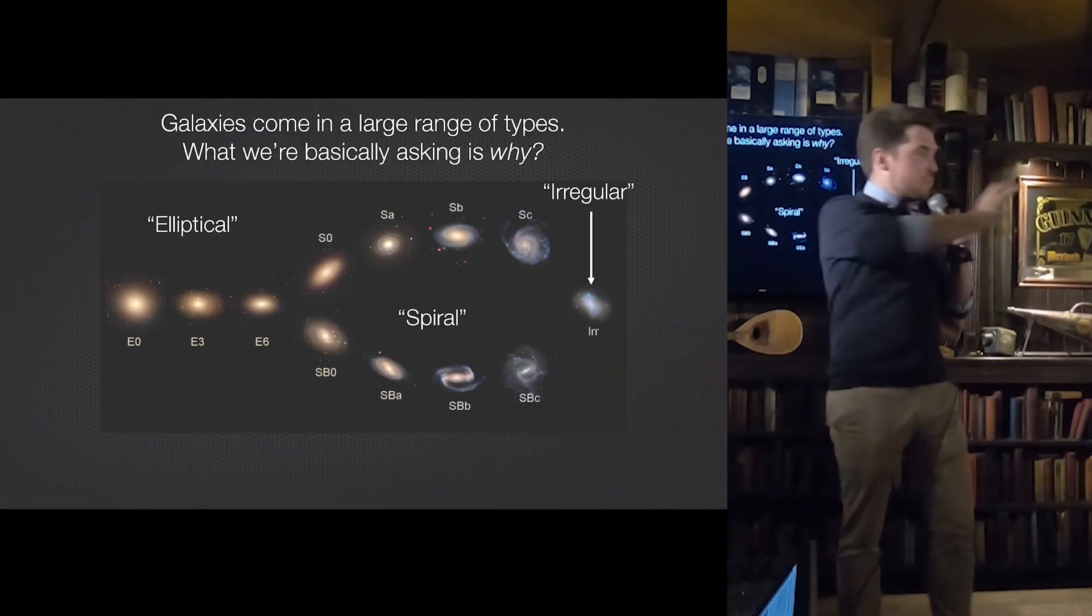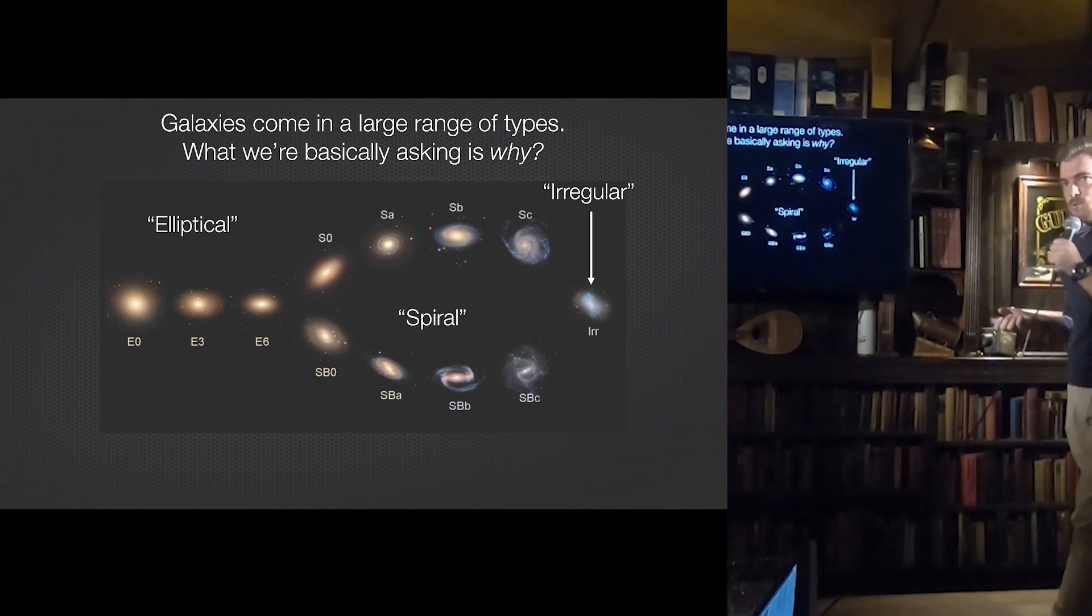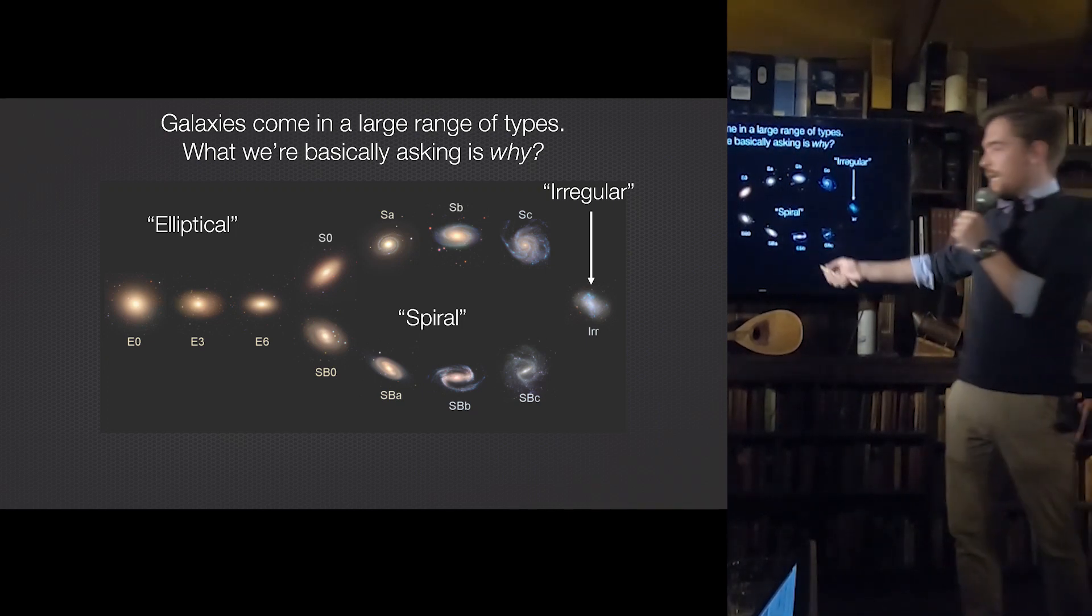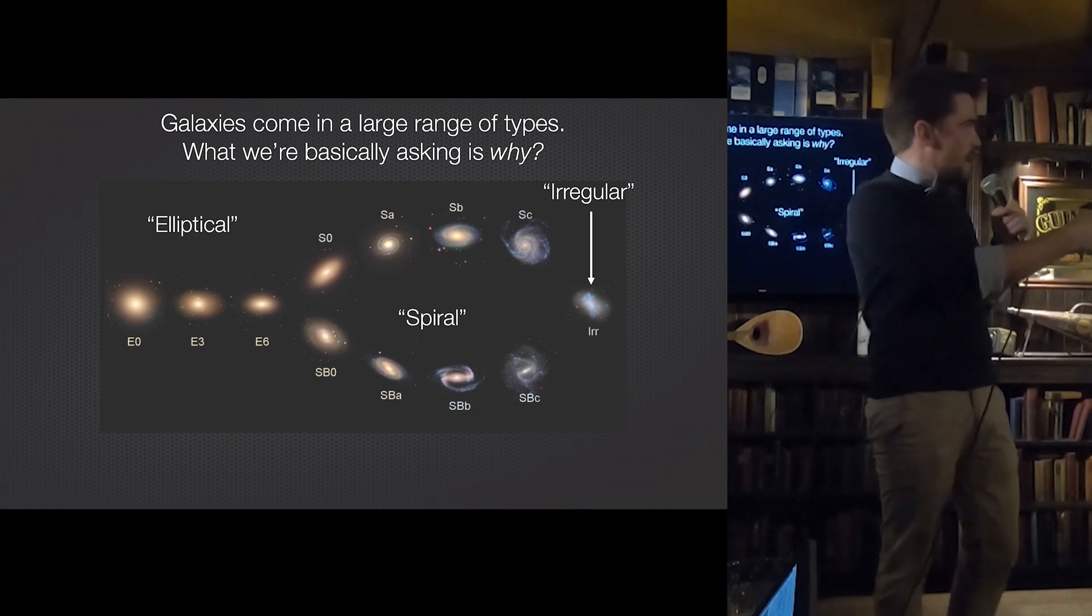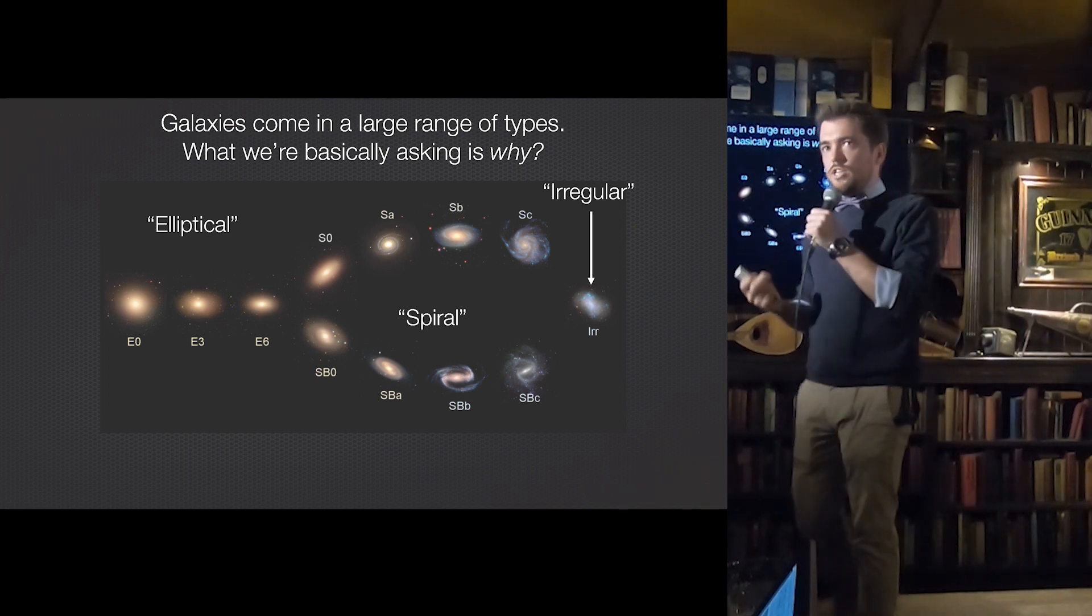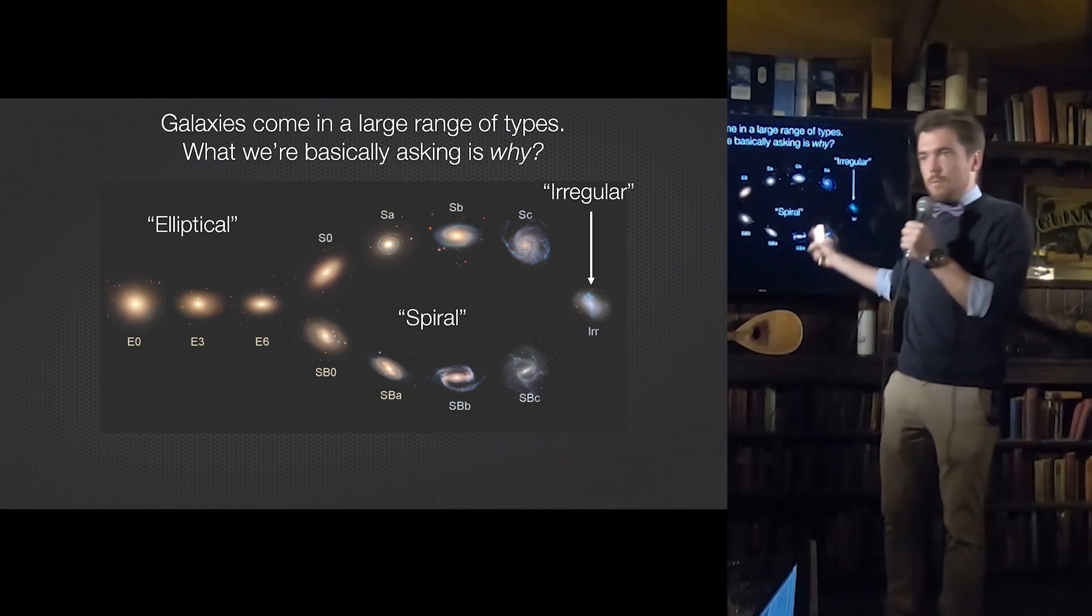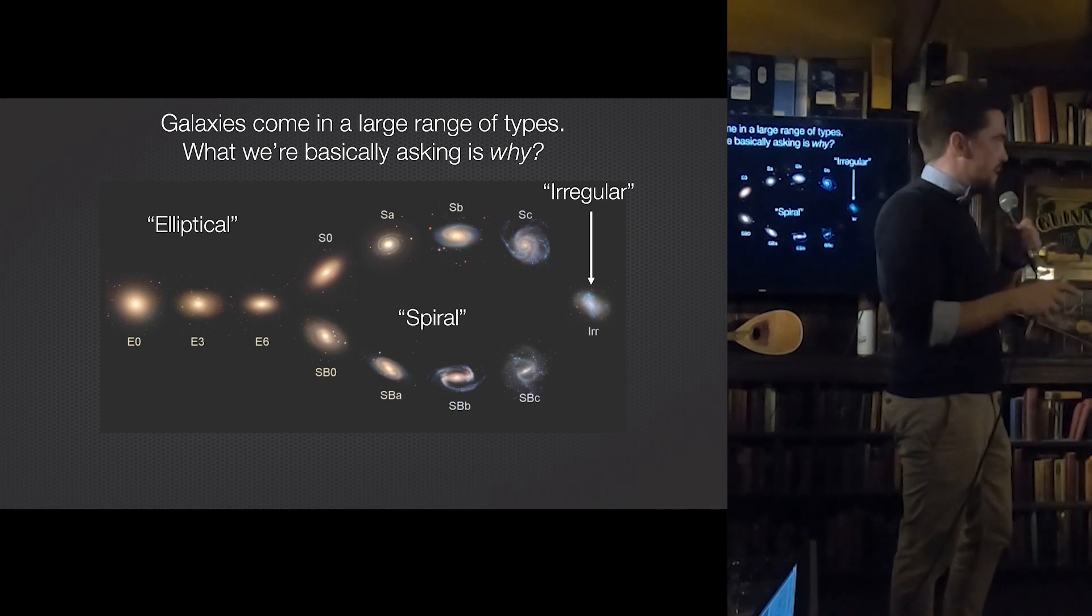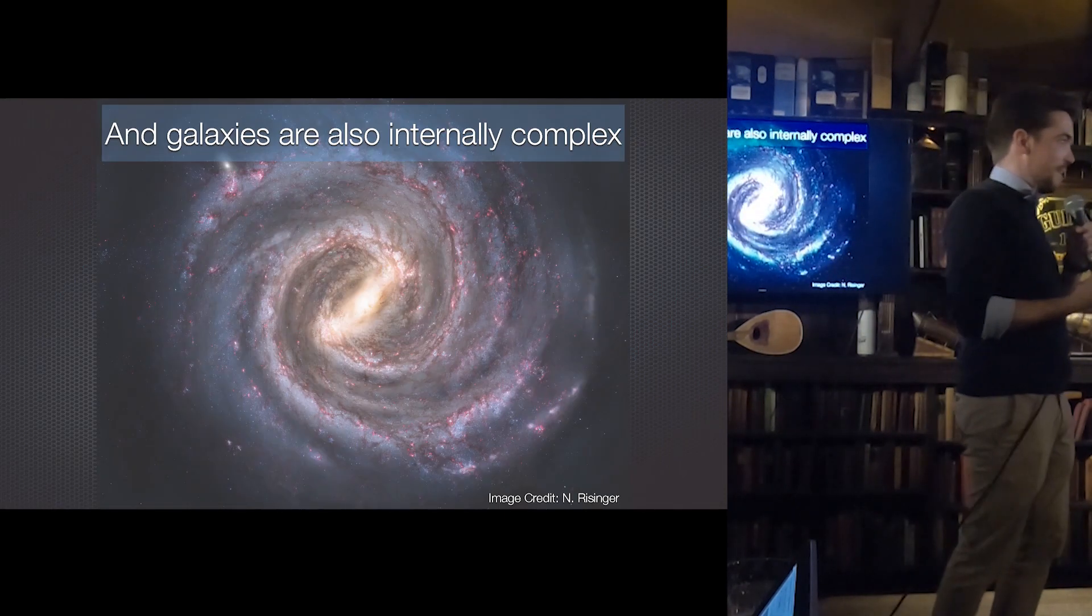So we have this diverse spectrum of what galaxies look like. We, as astronomers, group them into a few different categories. This is what we routinely refer to as the Hubble tuning fork of galaxy types. You have these sort of blobby, round-looking things on the left and then you have this sort of spectrum that goes all the way through to your disk galaxies here, which we call spirals. And then all the way on the very edge, you have these irregular galaxies that don't appear to have any structure whatsoever. So the question that we ask is, is this because just of the way in which galaxies interact with one another?